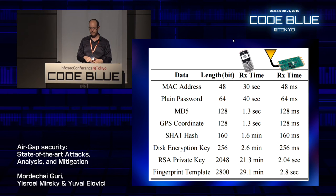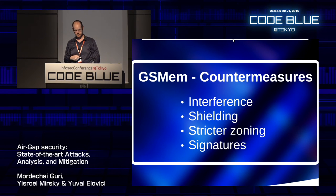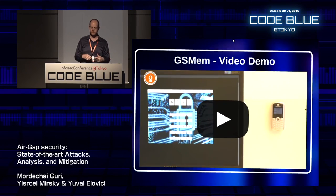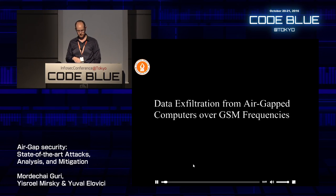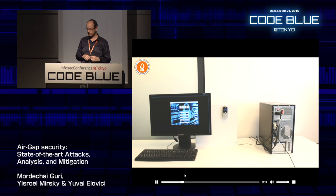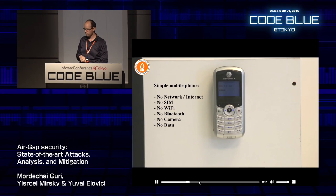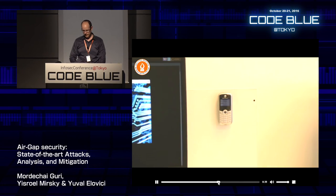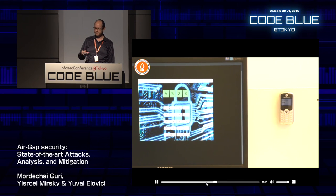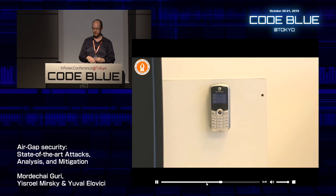Countermeasures for GSMem: interference, shielding, zoning policies, no phones whatsoever in restricted areas, and looking for particular signatures. In the demo, an air-gapped computer has a keylogger that picks up a typed password and transmits it through the memory bus to a neighboring Motorola C123 phone.